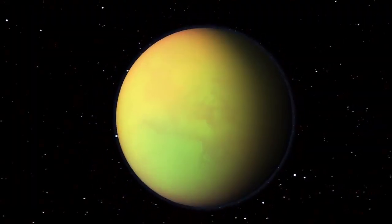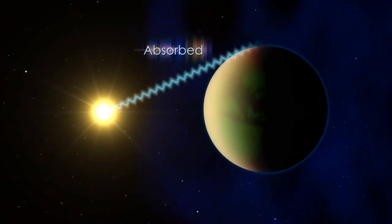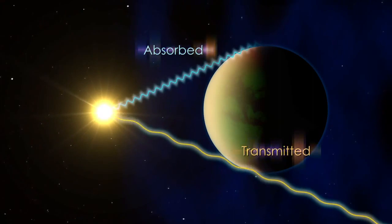As the planet crosses its star, its atmosphere absorbs certain wavelengths of light, or colors, while allowing other wavelengths to pass through.